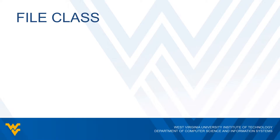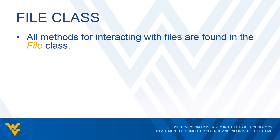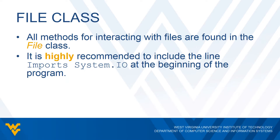In order to do stuff with files, we have to use the appropriate methods. All these methods for interacting with files can be found in the File class in Visual Basic. In order to use the File class, we have to use a special library. It's highly recommended that we include the line 'Imports System.IO' at the beginning of our program. This imports the System.IO library that we can use for accessing the File class.